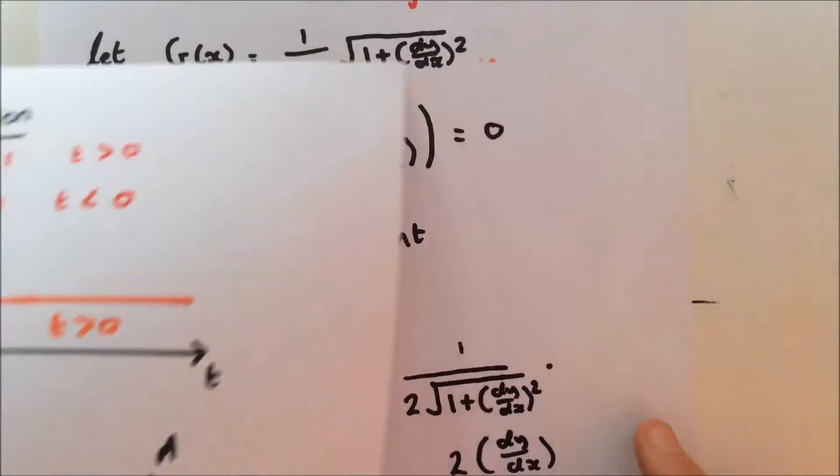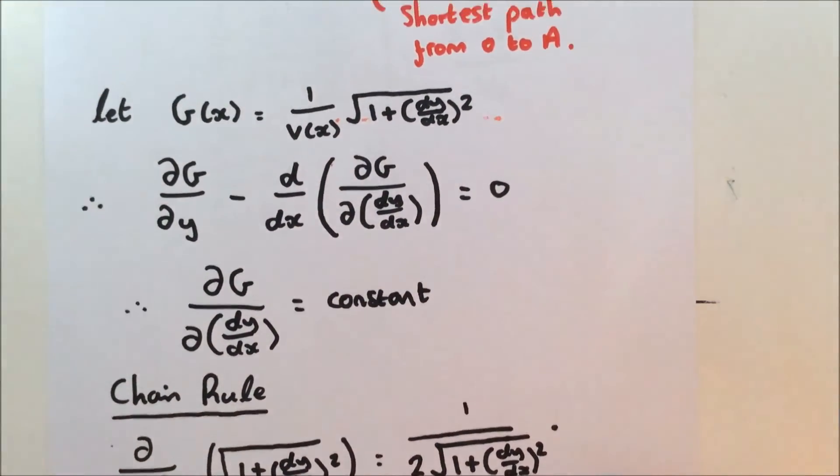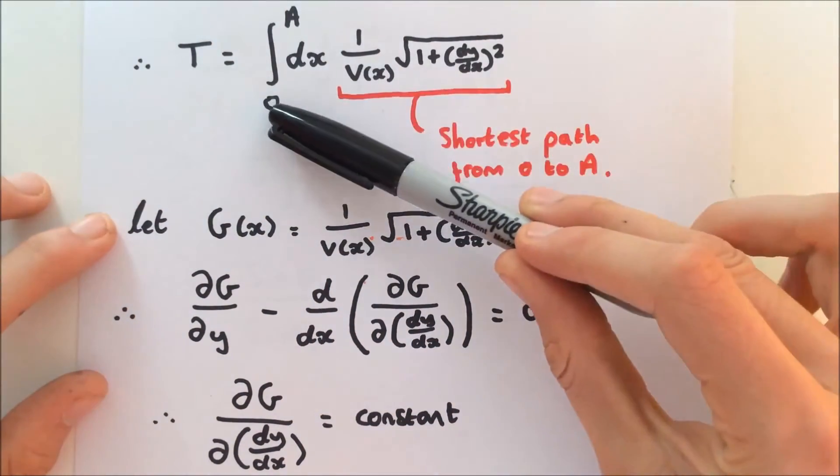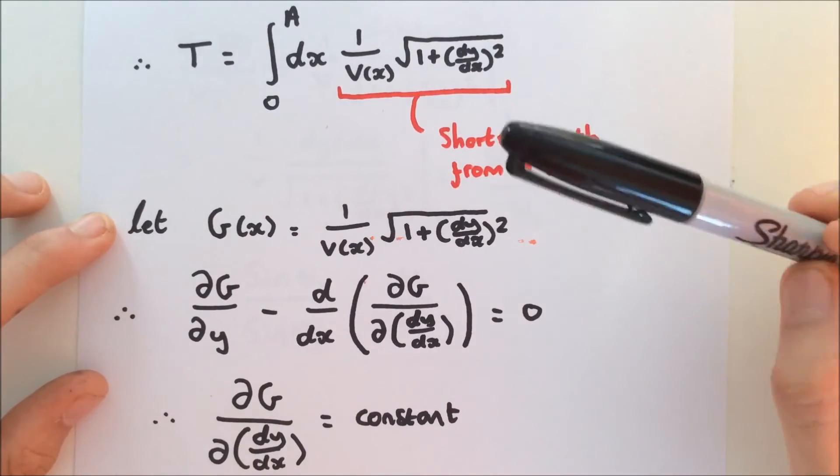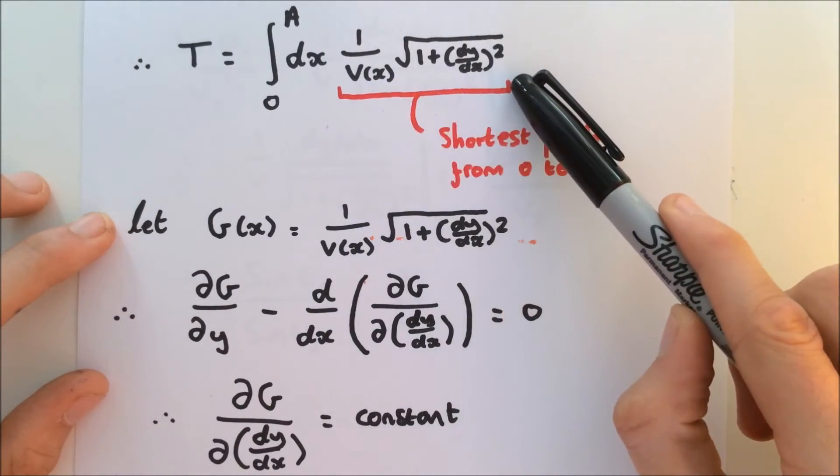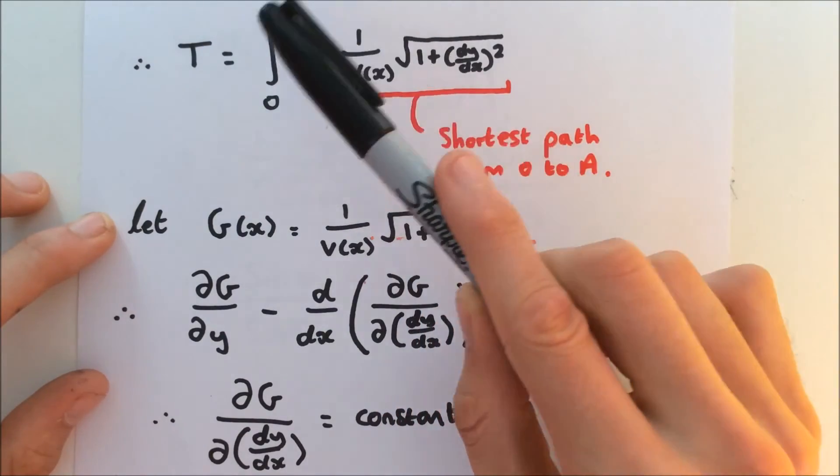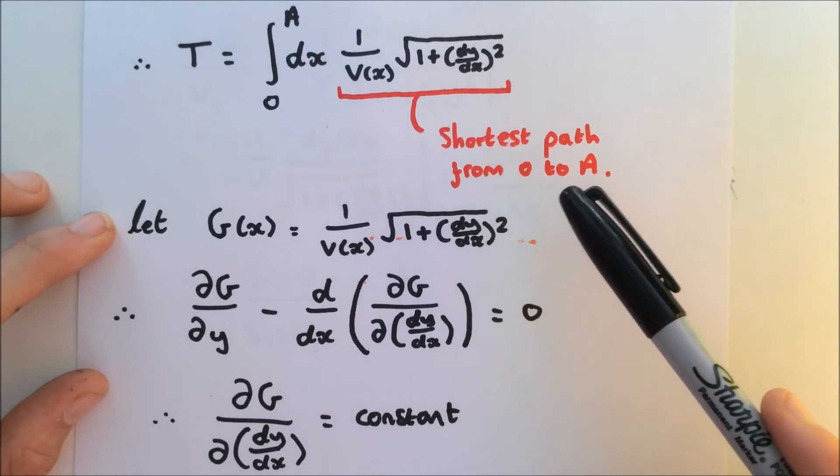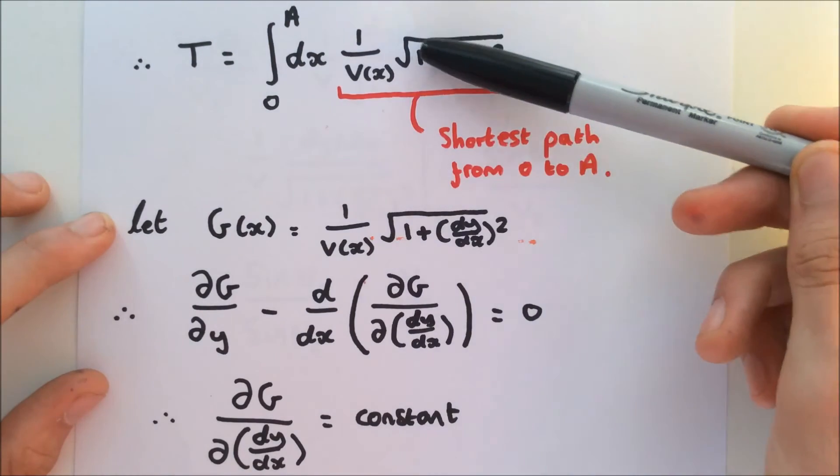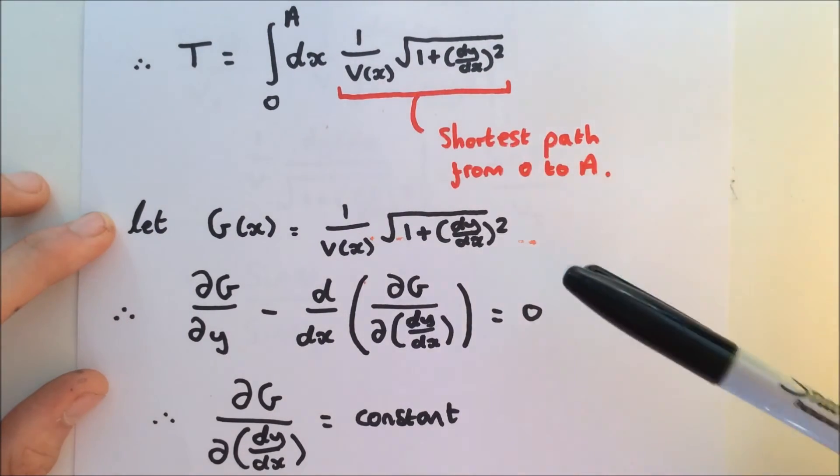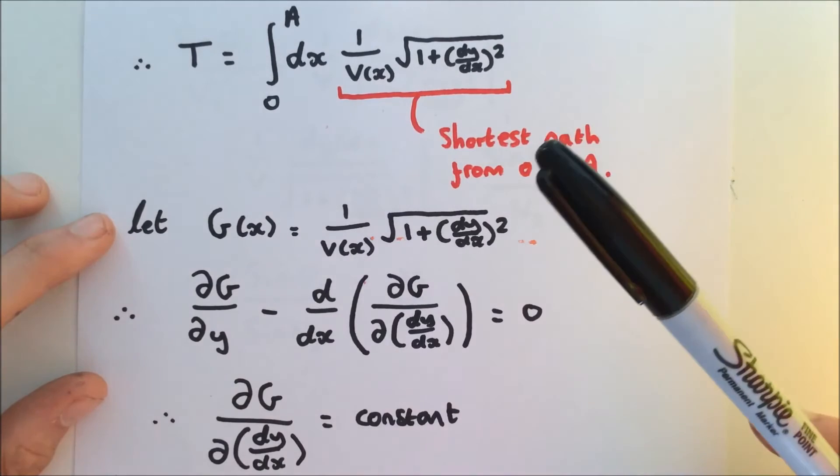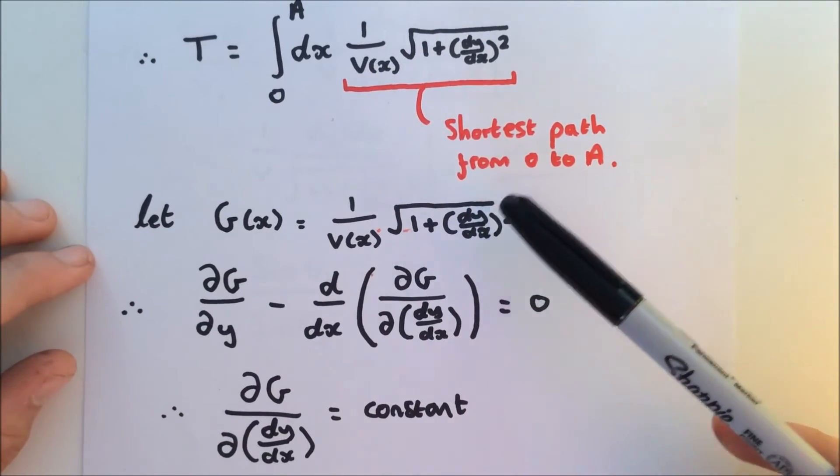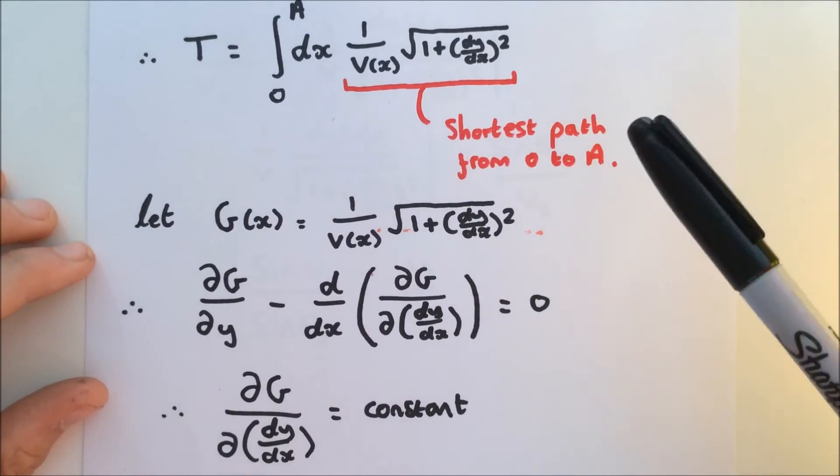So we've got it in terms of this. We can therefore rewrite it in terms of 1 over vx, which is our step function, in this nice simple integral. Now, Fermat's theorem: this integral from O to A, the total time, must be the shortest path from O to A. In other words, it's the straight line from our surface, then the straight line emerging from our surface. Fermat's theorem says light travels in the straight line. Therefore, we can use that to say that if this is the shortest path, it must satisfy the Euler-Lagrange equation.